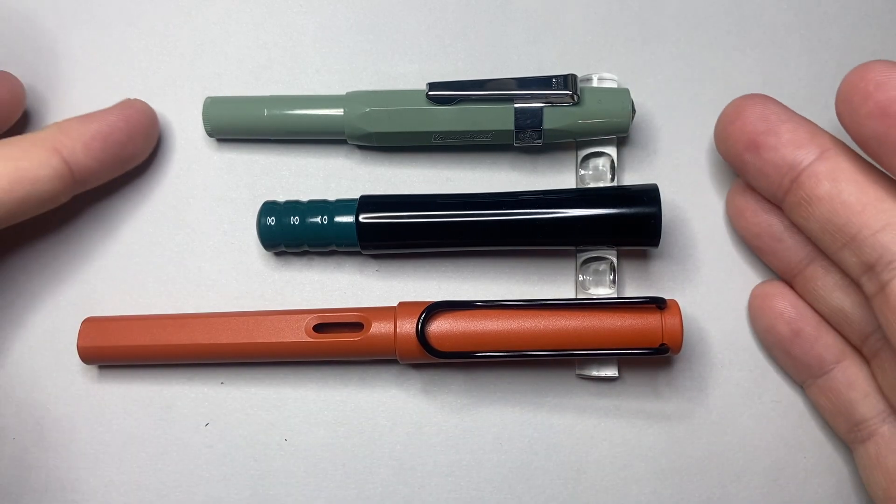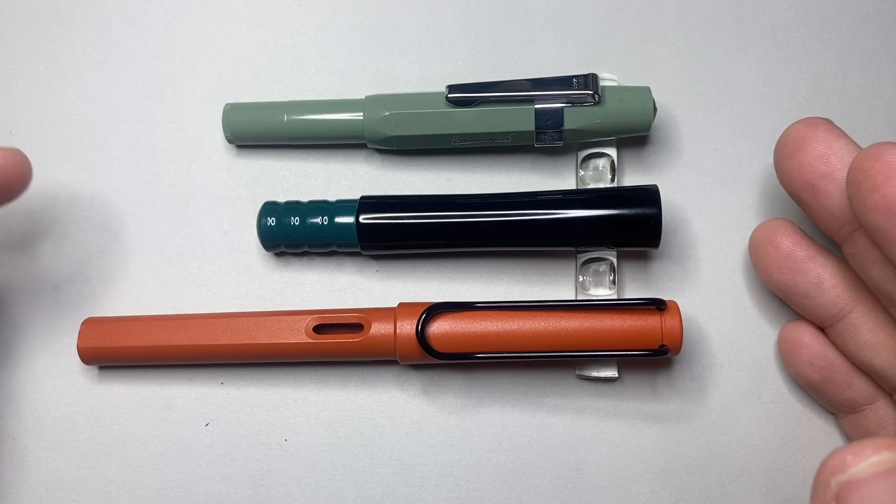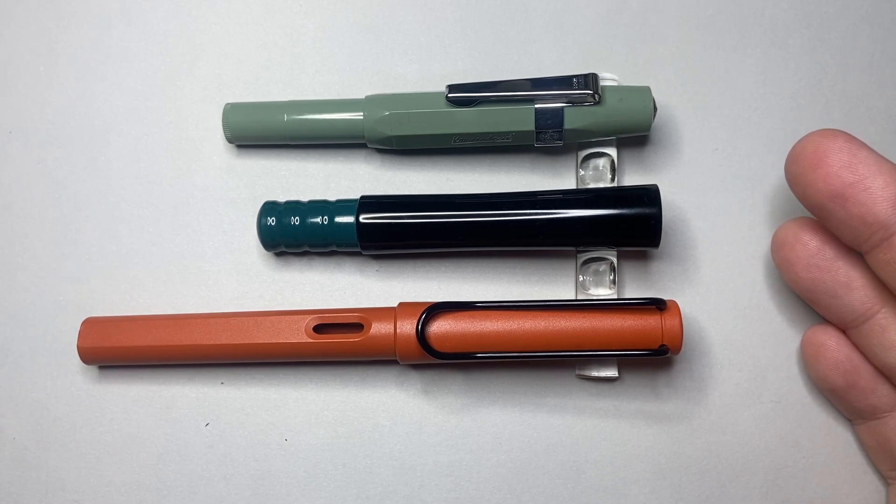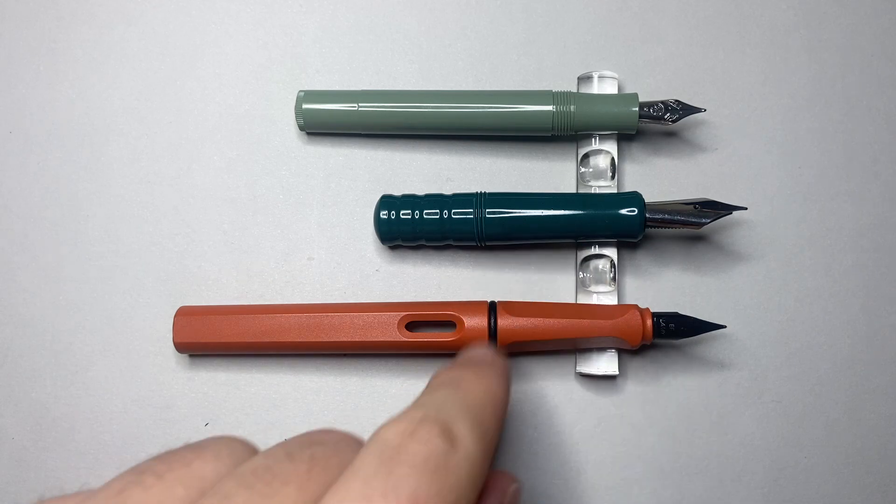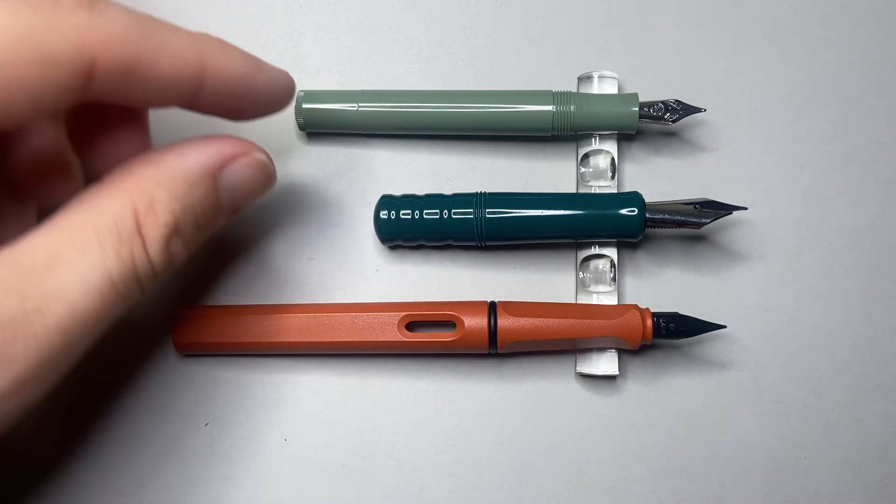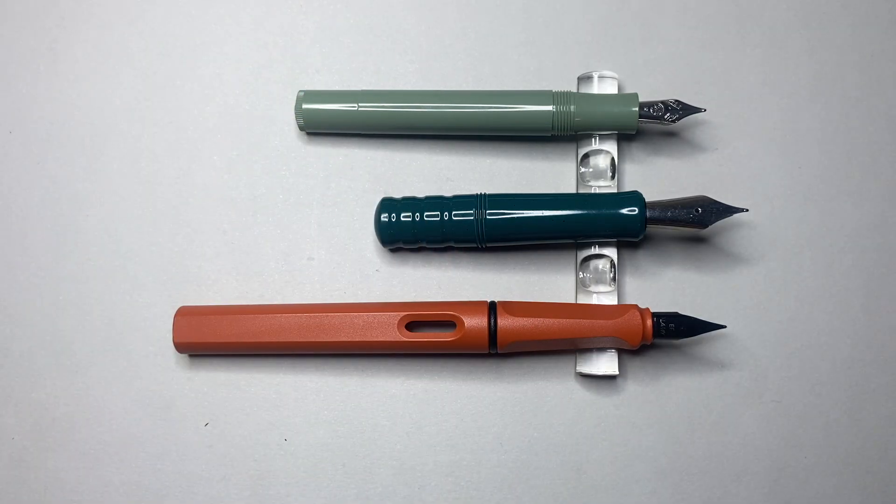You can see it is smaller than the Kaweco Sport and has a number 6 nib as well. Neither the Kaweco Sport nor the Pen 7 fountain pen are designed to be written with unposted, but you can see the Pen 7 has its number 6 size nib, bigger than both the Lamy and the Kaweco nibs.